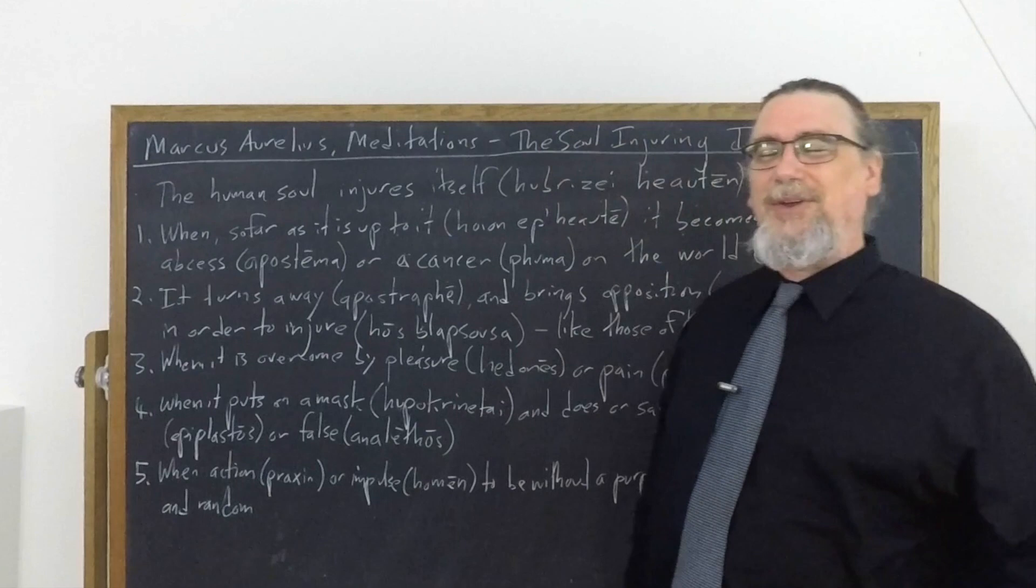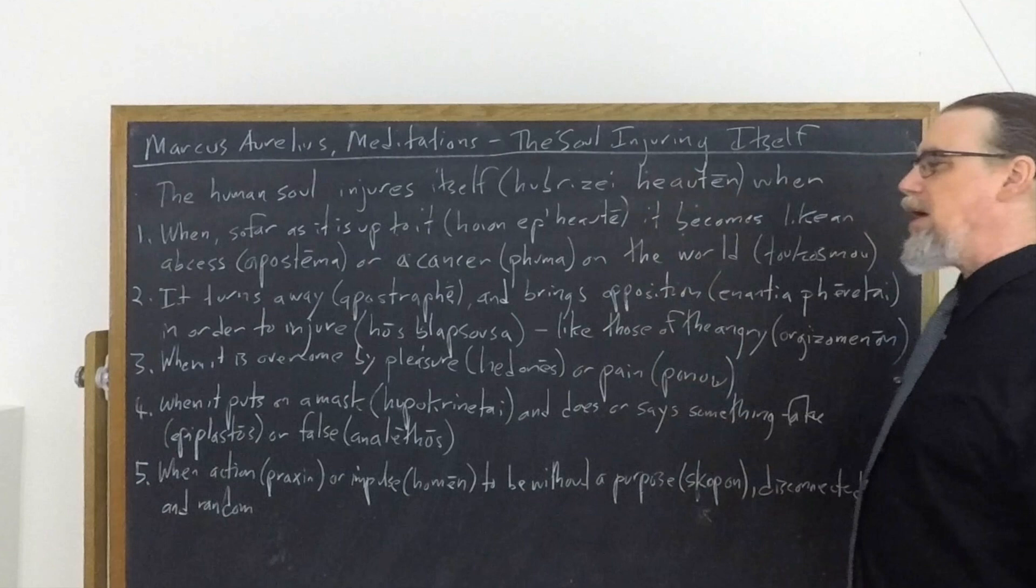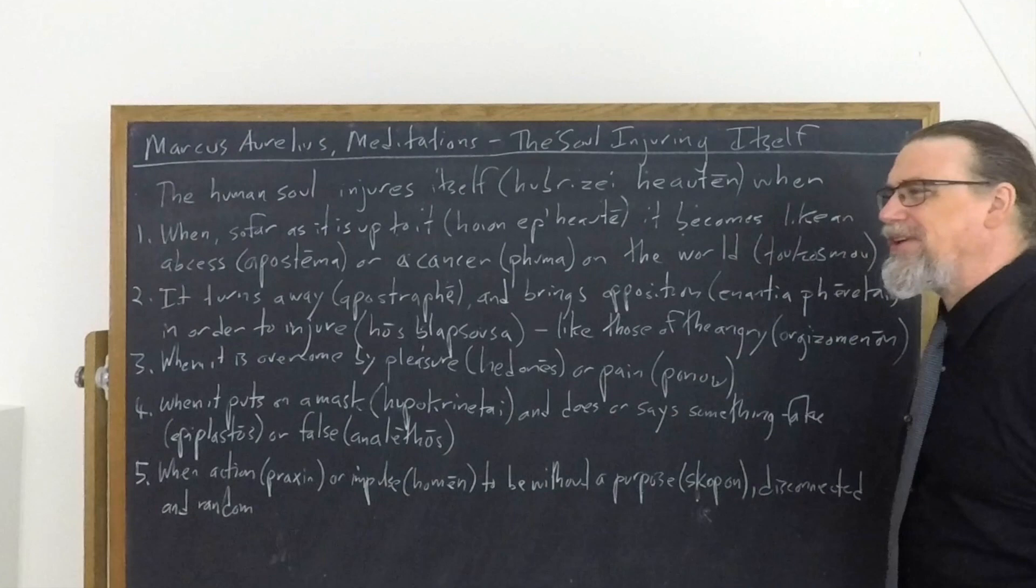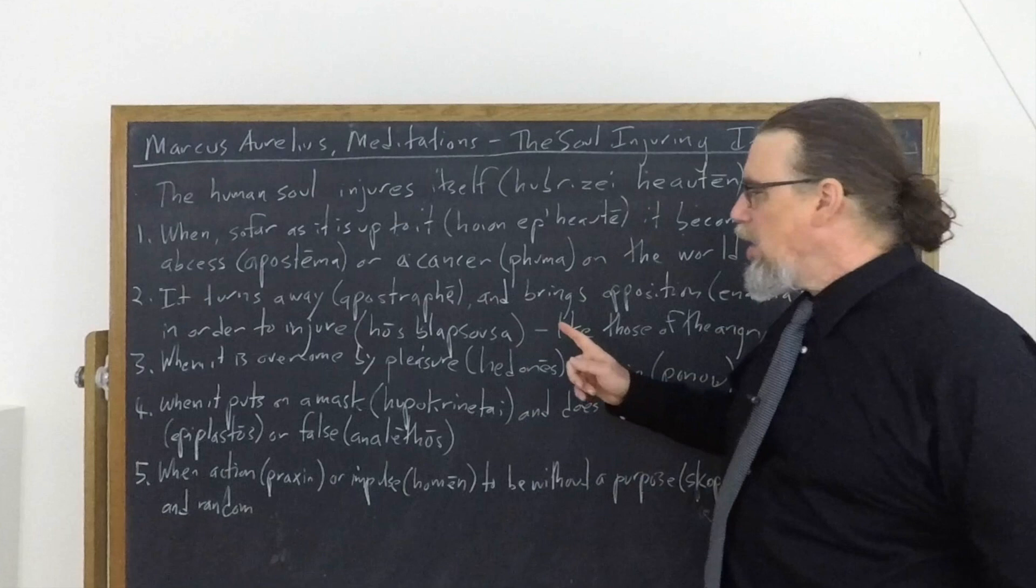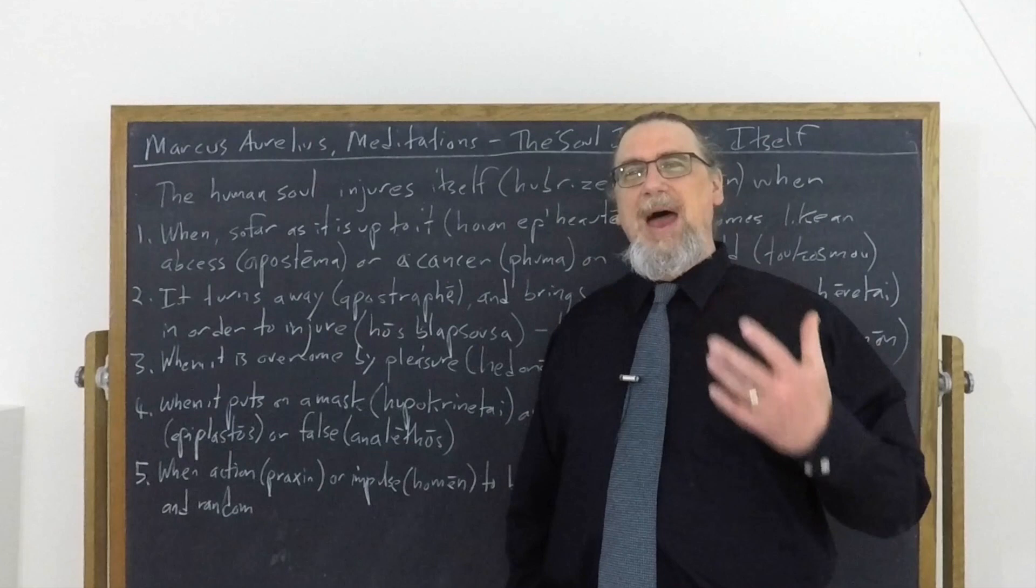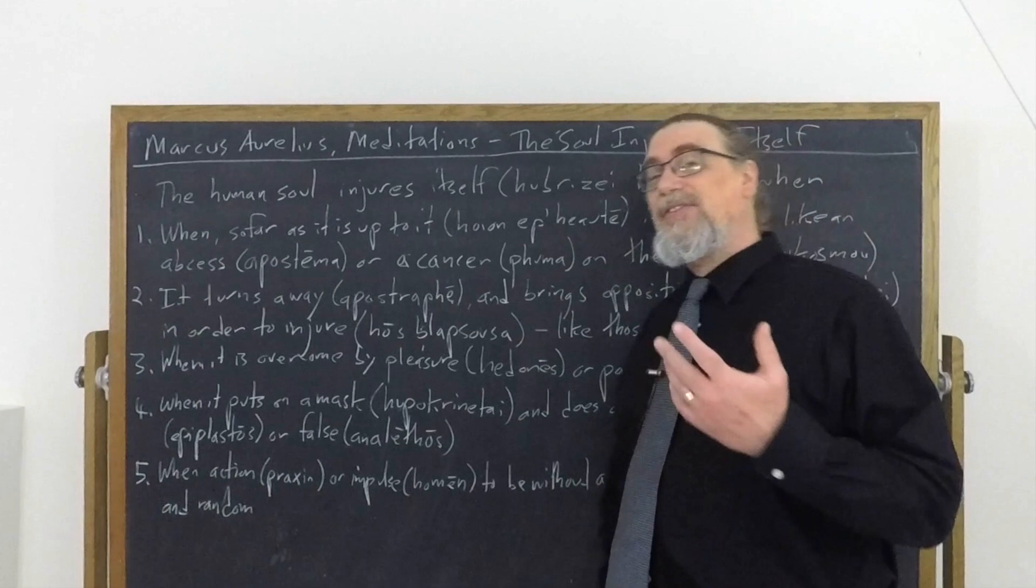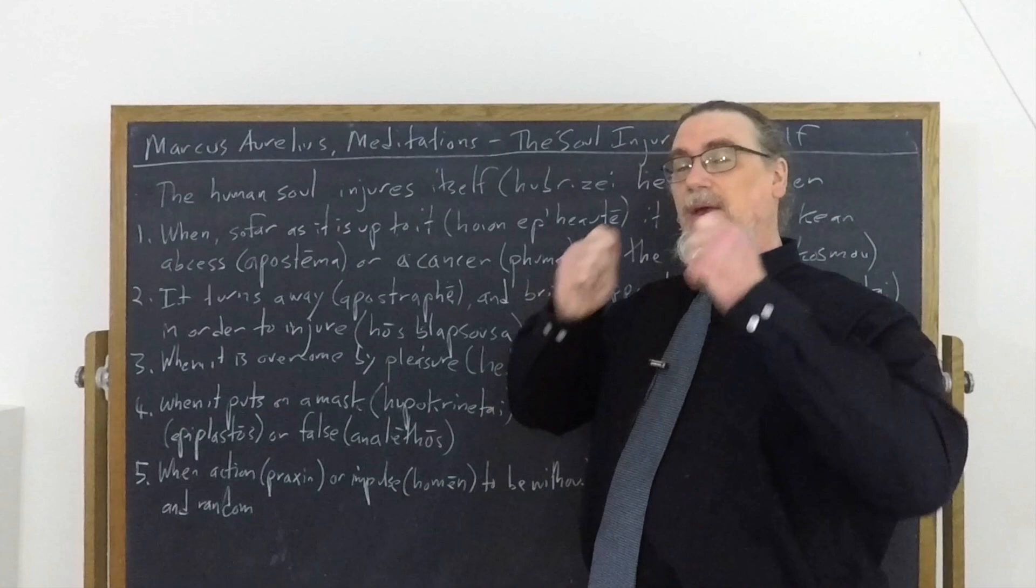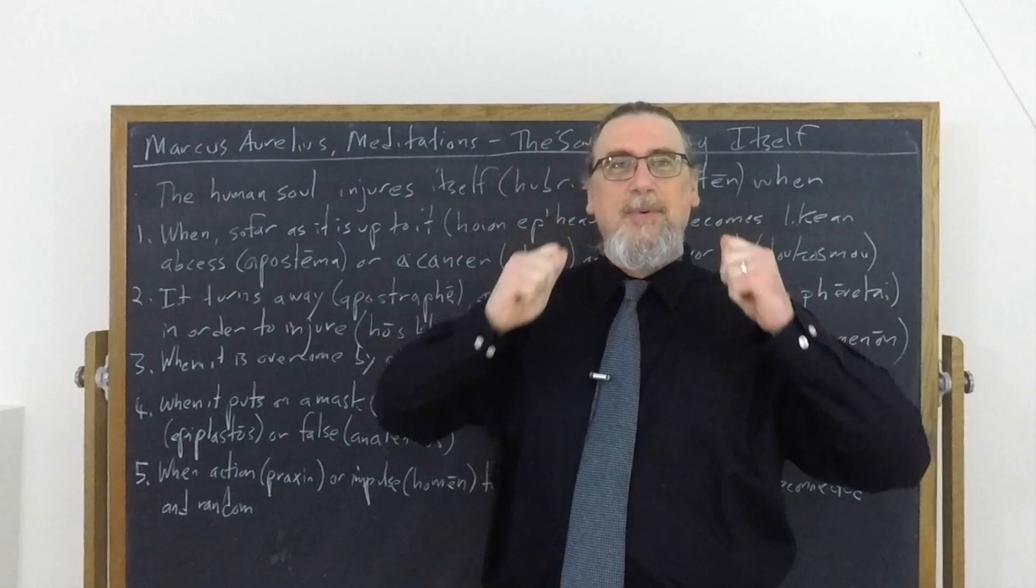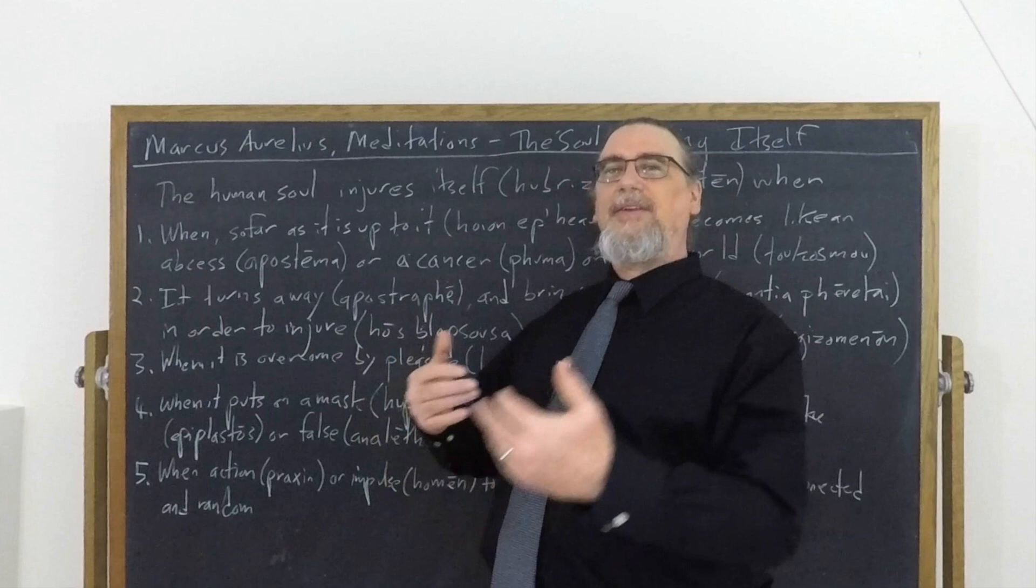But the fourth one is particularly interesting. When it puts on a mask. Now the Greek for that is connected to a term that you probably recognize from a somewhat different context. Hupokrinetai. So we get the word hypocrisy and hypocrite from this. And that originally means somebody who either is an actor or somebody who is behaving like an actor, somebody who is, as we say, putting on airs. In this case, putting on a mask, because in ancient times, a lot of the comedy and tragedy, you actually had a mask that you put on. So in ordinary life, you're putting on a mask when you're playing somebody else, you're pretending to be something that you're not. And this involves doing or saying, so both action and words.